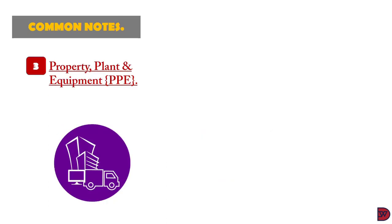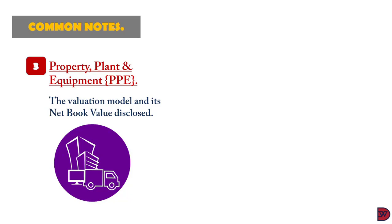Thirdly, property, plant and equipment. All machinery, furniture, fittings, computers, and equipment are detailed here. The policies used — whether cost or revaluation model — to present them in the financial statements, and the activities during the year, be it additional purchases or sales of assets, are to be captured here. The accumulated depreciation for each category of asset and its resulting net book value should also feature.